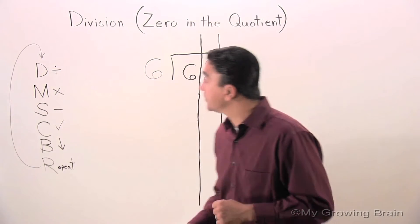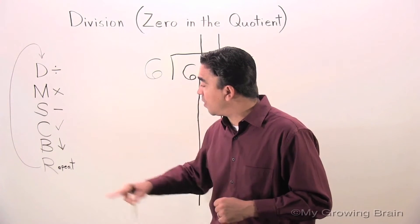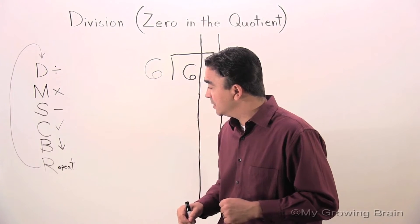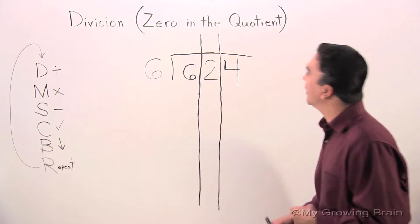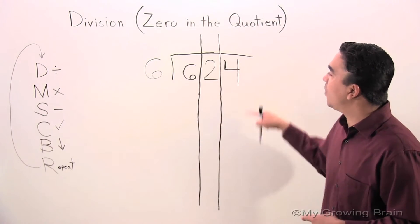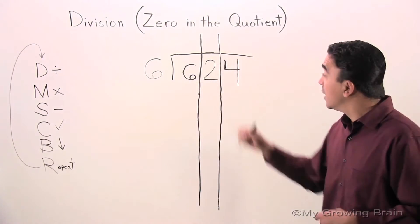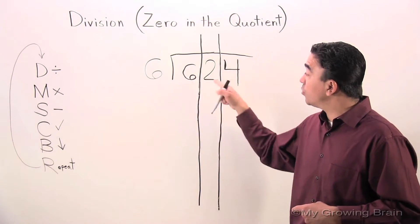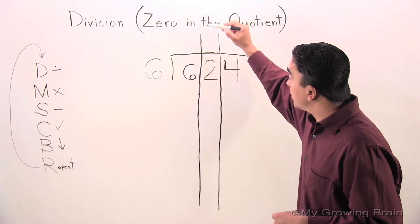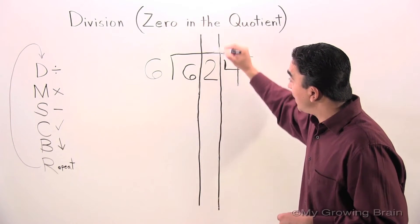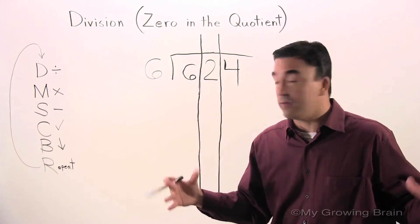Take a look over here: 'Did mom serve chocolate before recess?' — that's our mnemonic. Now let's get to work. Six hundred twenty-four divided by six. Six hundred twenty-four is the dividend, and I've put lines separating the digits to keep my work more organized.